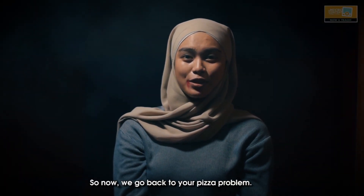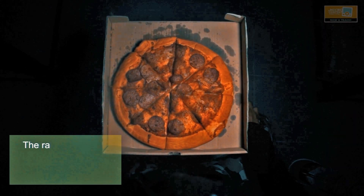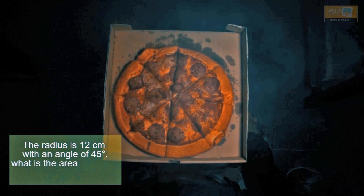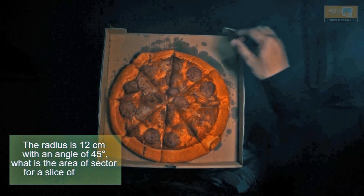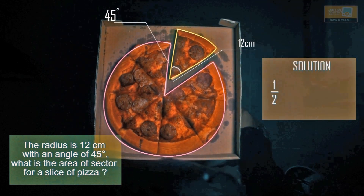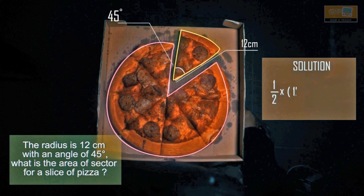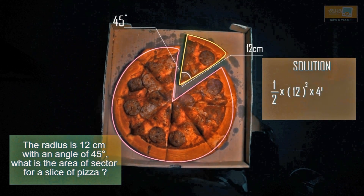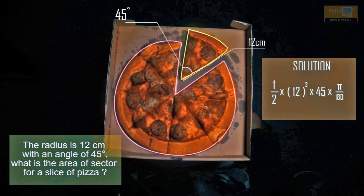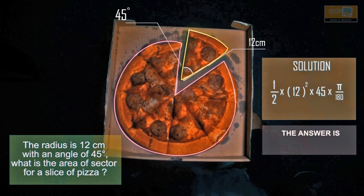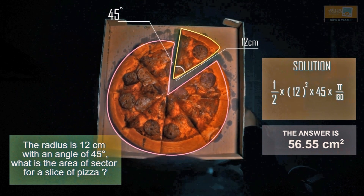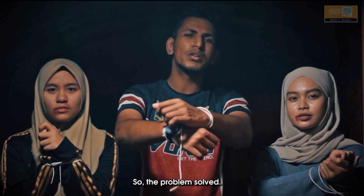Now we go back to your pizza problem. If the radius is 12 cm with an angle of 45 degrees, what is the area of sector for a slice of pizza? The solution will be 1 over 2 times 12 squared times 45 times pi over 180 degrees. So the answer is 56.55 cm squared. The problem is solved.